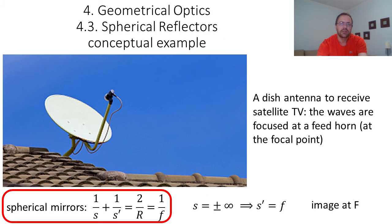You can still see dish antennas on roofs to receive satellite TV. In this case, the source of waves is very far away, so the dish will focus the waves at its focal point. The receiver is usually located at the focal point of the dish.